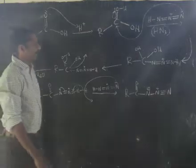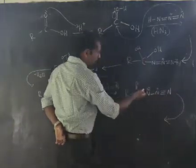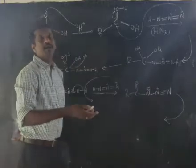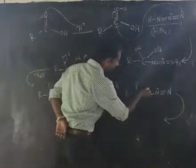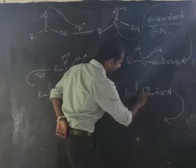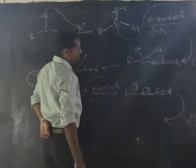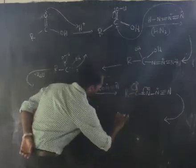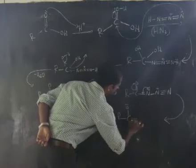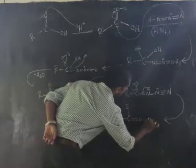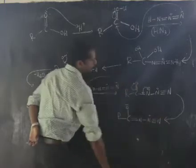This step is common with Hofmann, Curtius, or Lossen rearrangement. The negative charge pair of electrons shifts to here, then that pair moves to oxygen, giving the intermediate: R-C(-O⁻)=N-N≡N⁺.